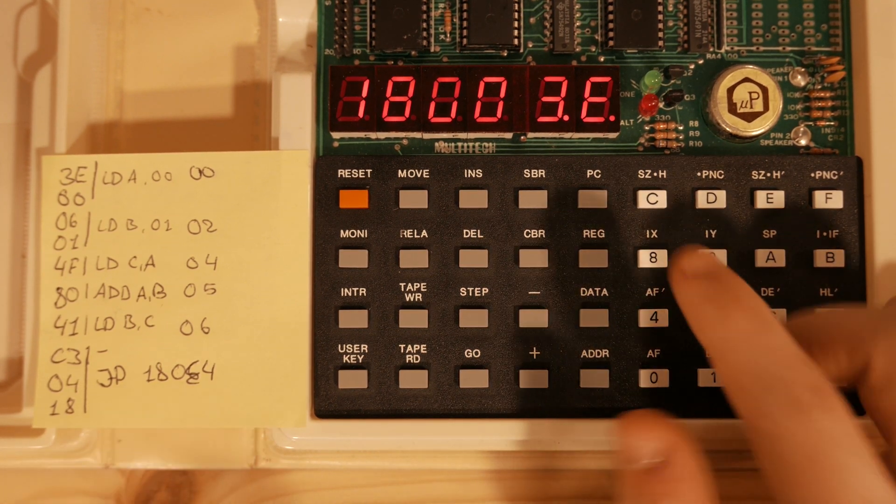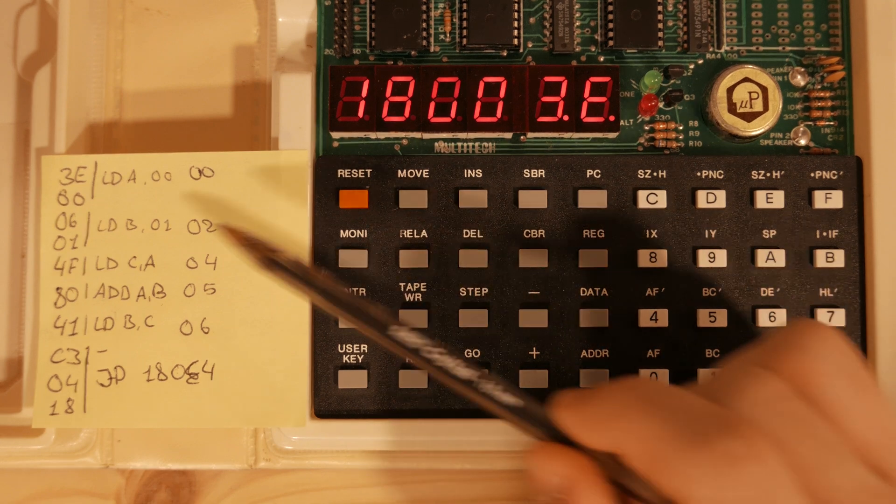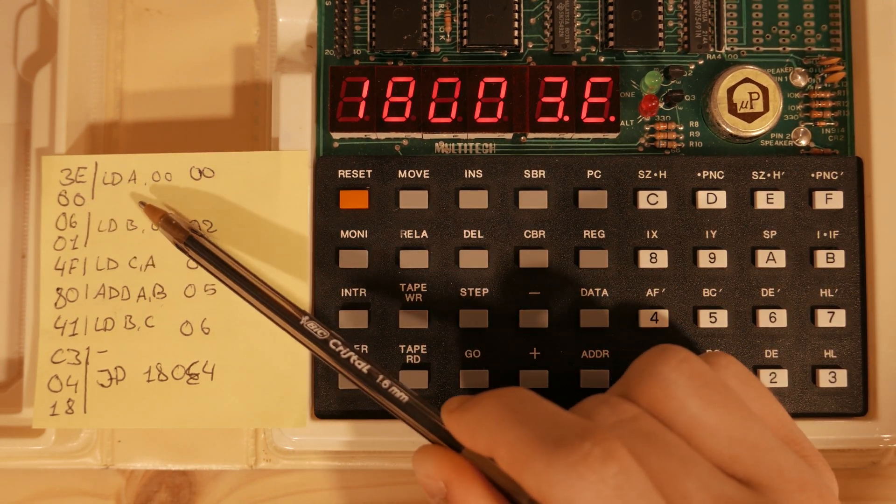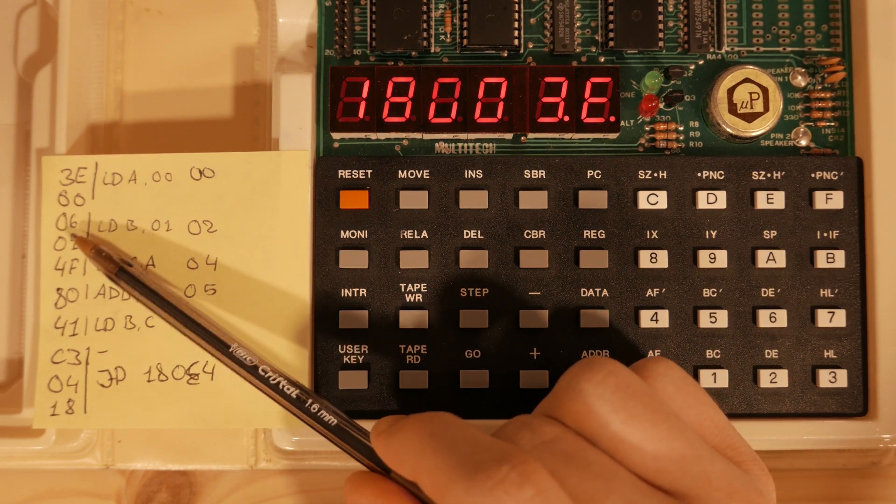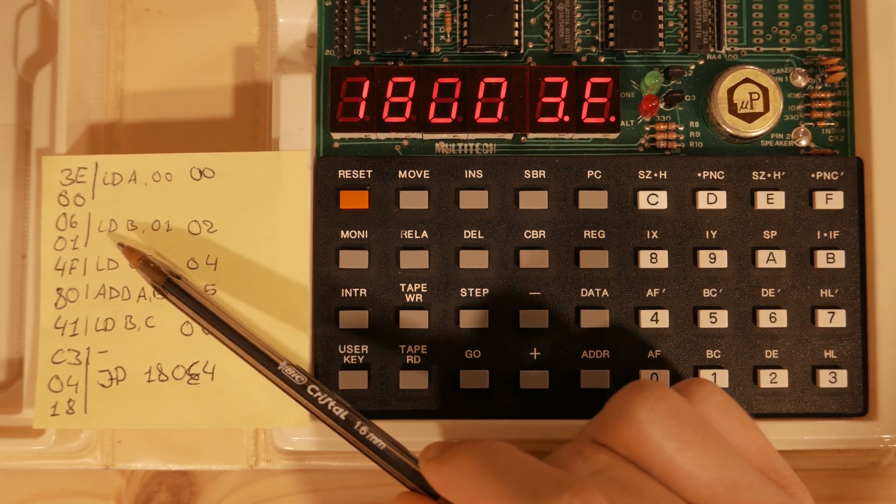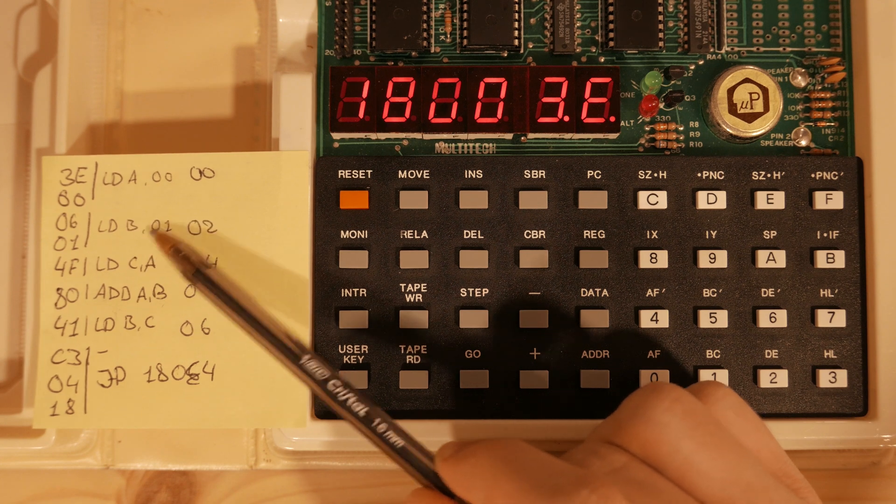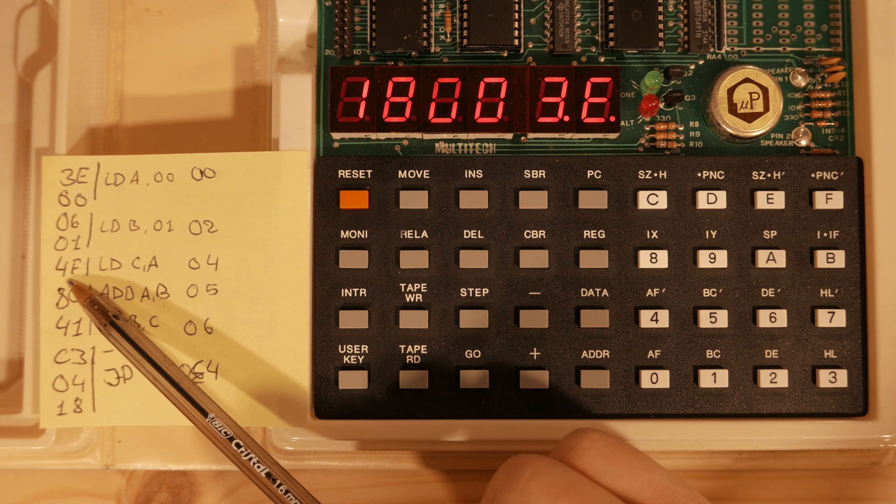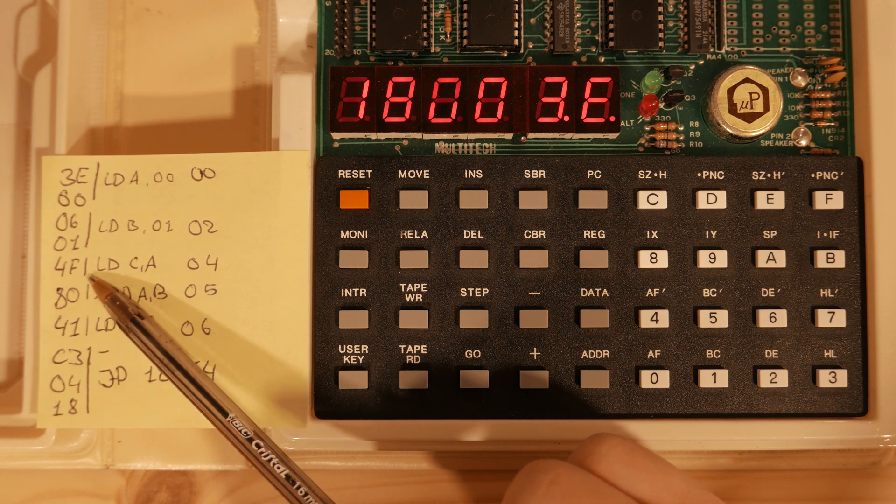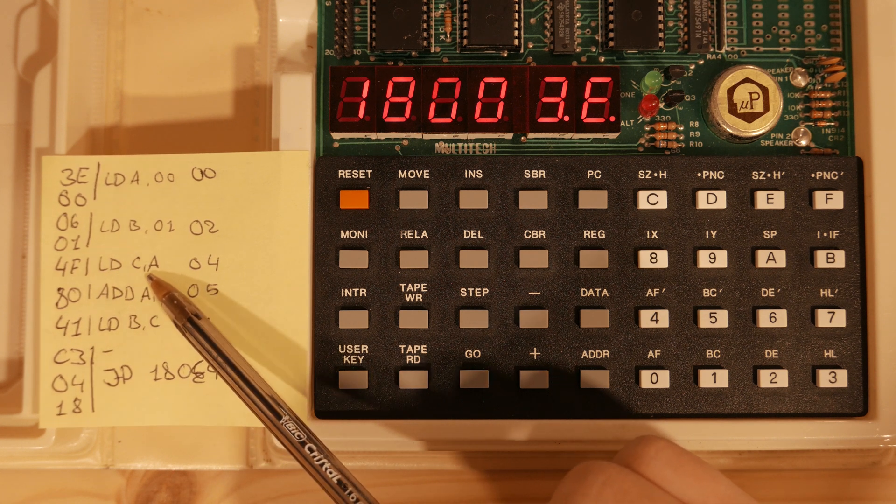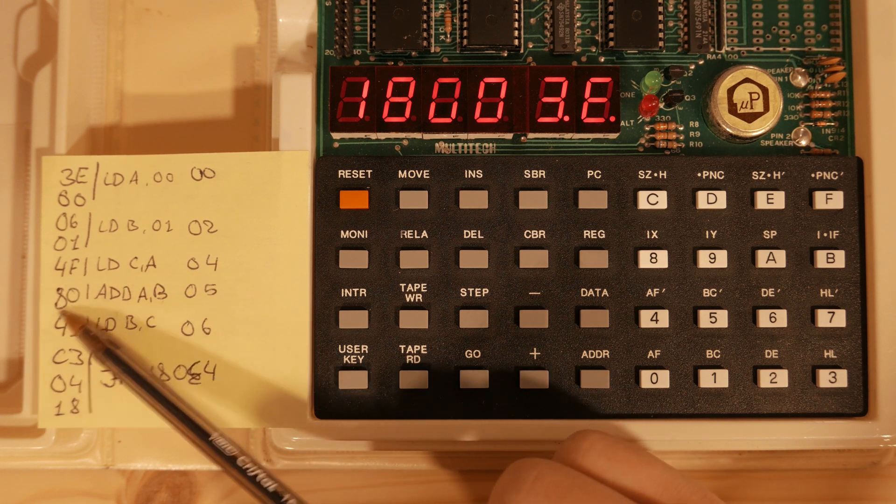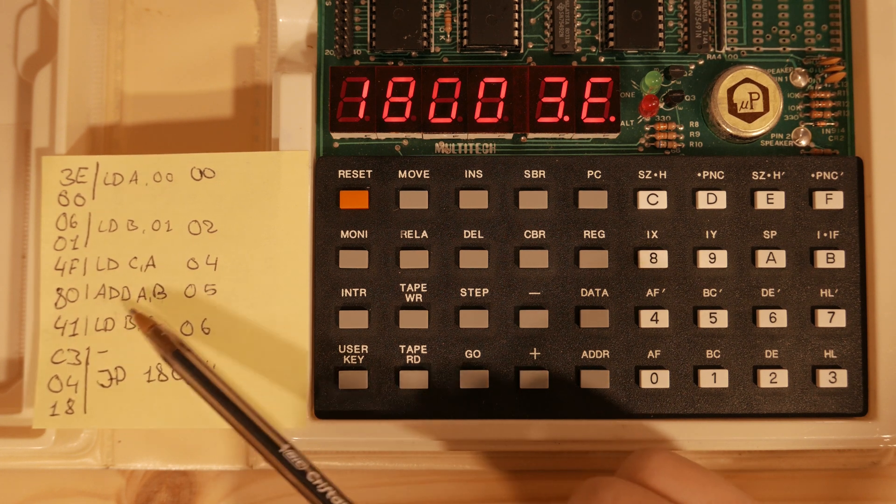If we just step through this, you maybe recognize these two first instructions, at least. 3E, 00 means load A with the value 00. 06, 01 means load B with the value 01. Now here comes a new instruction, 4F. What this instruction means is load A into C. So load C with A. Then 80, once again, add B to A.